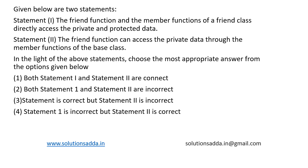This is a question from programming. We are given two statements. Statement one: the friend function and the member functions of a friend class directly access the private and protected data. This statement is true because in C++, a friend function and friend classes have special privilege to access the private and protected members of the class where they are declared as friends. They sort of break the encapsulation, which makes them highly privileged members.